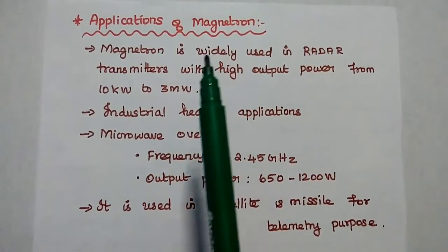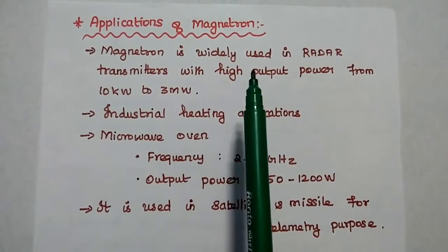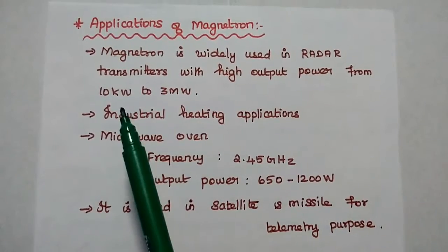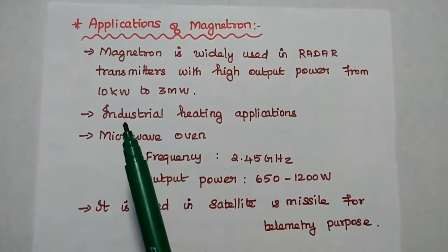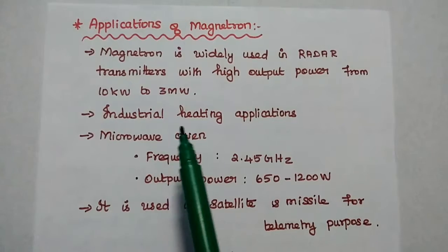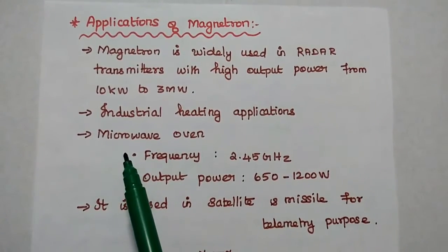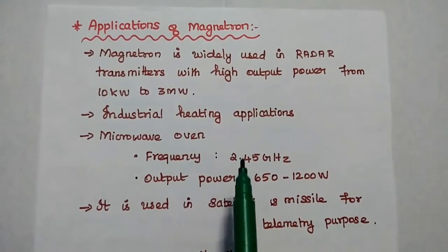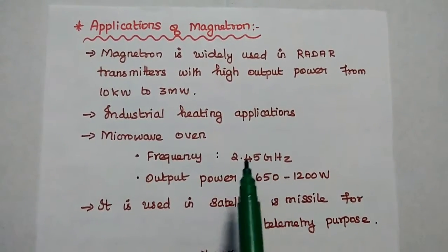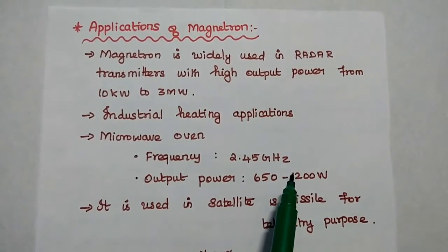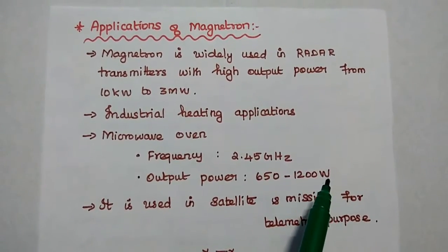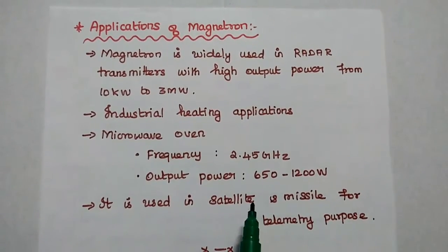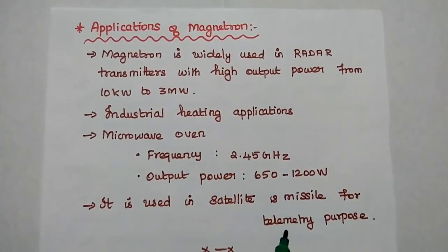The applications of magnetron include: it is widely used in radar transmitters with high output power from 10 kilowatts to 3 megawatts; it is used in industrial heating applications; and it is widely used in microwave ovens with a frequency of 2.45 gigahertz and output power of 652 to 1200 watts. It is also used in satellite and missile applications for telemetry, as well as in advanced temperature and electrical heating.